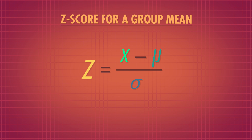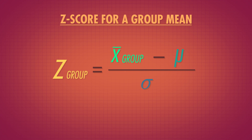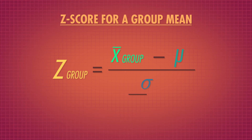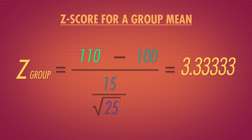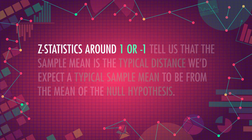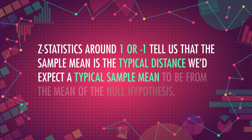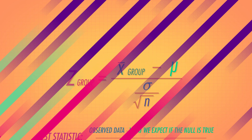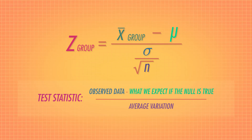Instead of taking an individual score and subtracting the population mean, we take a group mean and subtract the mean of our sampling distribution under the null hypothesis. Then we divide by the standard error, which is the standard deviation of the sampling distribution. So the z-score, also called the z-statistic, tells us how many standard errors away from the sampling distribution mean our group mean is. Z-statistics around 1 or negative 1 tell us that the sample mean is the typical distance we'd expect from the mean of the null hypothesis. Z-statistics that are a lot bigger in magnitude mean that this sample mean is more extreme, which matches the general form of a test statistic.